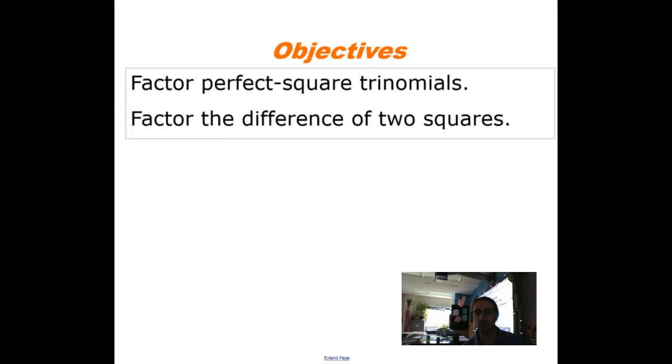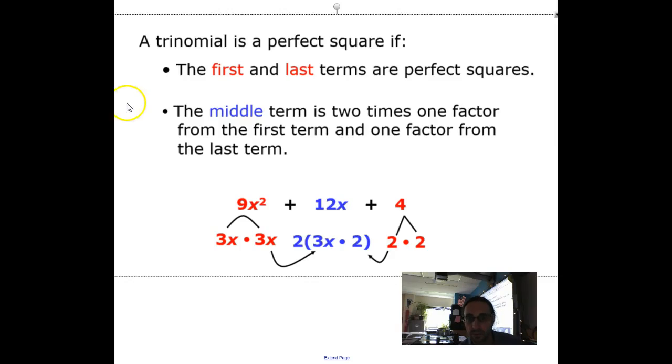As a little reminder, a trinomial is a perfect square if the first and last terms are perfect squares, number one, and number two, the middle term is two times a factor of the first and a factor of the third term. This is like a squared plus 2ab plus b squared, and that's what we're trying to do is to see if this has that form.